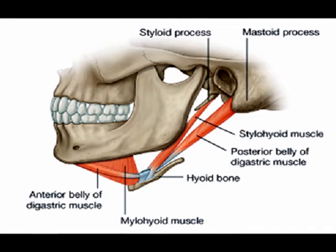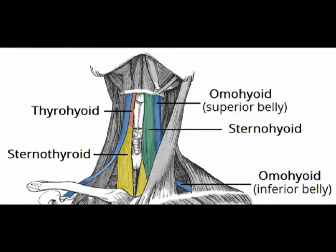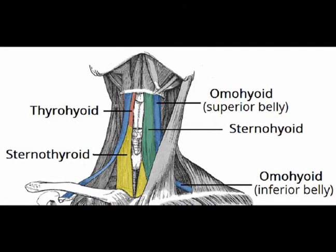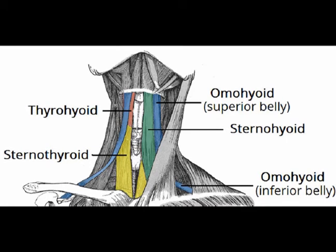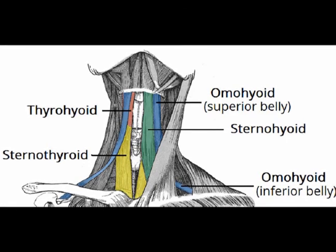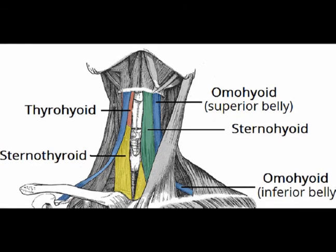They function in elevating the hyoid bone. The infrahyoid muscles are four pairs of muscles located in the anterior neck between the hyoid superiorly and the shoulder girdle inferiorly. They function in depressing the hyoid during swallowing and speaking.